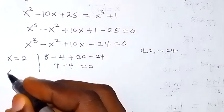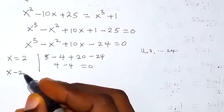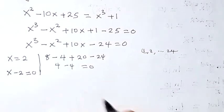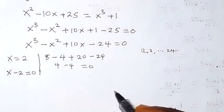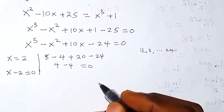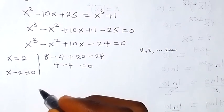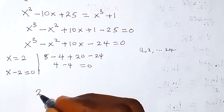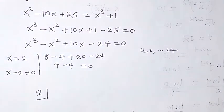Equivalently, we can say x minus 2 is a factor, so x minus 2 equals 0. Now to get the other factors and roots, we can use synthetic division — let's divide this polynomial by 2.